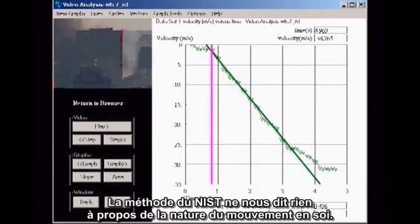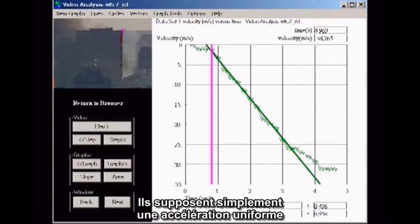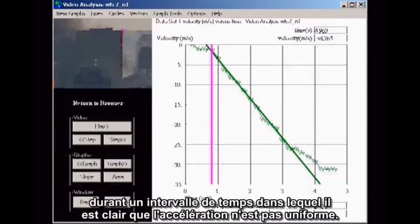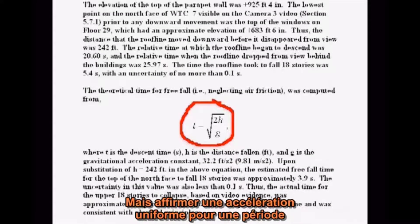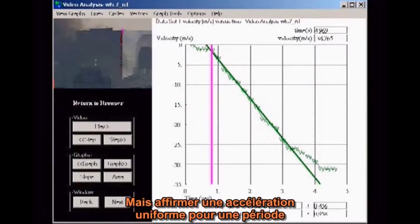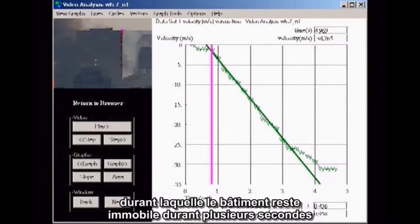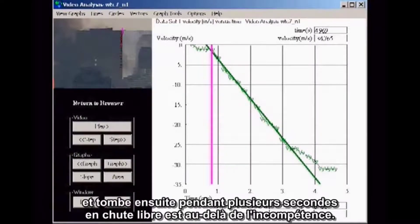This method tells us nothing about the nature of the motion itself. They merely assume uniform acceleration over a time interval in which it is clear that the acceleration is not uniform. Mislabeling their assumption to be constant speed indicates sloppy work, but asserting uniform acceleration for an interval where the building sits nearly motionless for several seconds, then drops for several seconds in freefall,